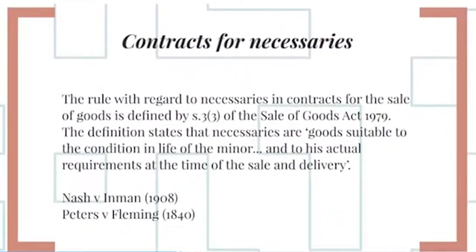The rule with regard to necessaries in contracts for the sale of goods is defined by Section 3.3 of the Sale of Goods Act 1979. The definition states that necessaries are goods suitable to the condition in life of the minor and to his actual requirements at the time of the sale and delivery. Note that necessaries does not mean necessities, but goods which are suitable to the minor's condition in life and his actual requirements. The liability is to pay a reasonable price, not the contract price.